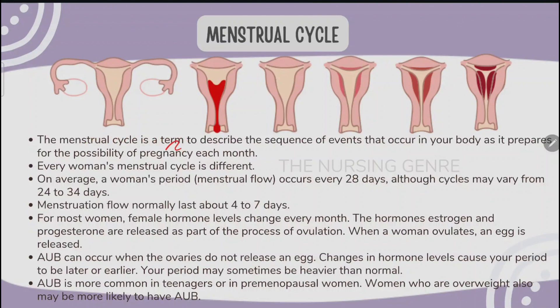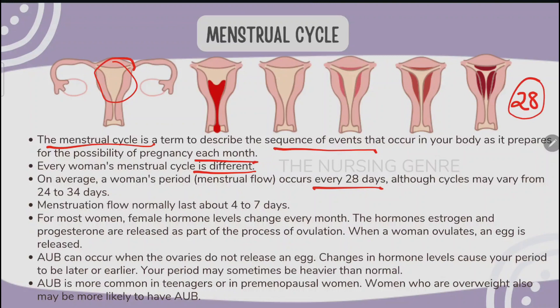The menstrual cycle is a term to describe the sequence of events that occurs in your body as it prepares for the possibility of pregnancy each month — every month the uterus prepares for pregnancy. Every woman's menstrual cycle is different; it is not always a regular flow. On average, a woman's period occurs every 28 days, with cycles varying from 24 to 34 days.